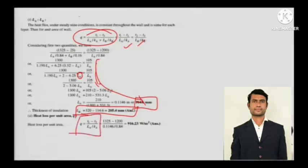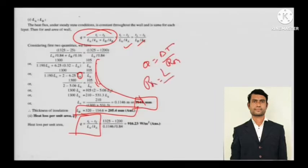For the heat loss per unit area, you can take either the firebrick or the insulation part and just apply Fourier's law. Fourier's law gives Q equals delta T divided by R_thermal, and we know that R_thermal for conduction is L divided by KA.